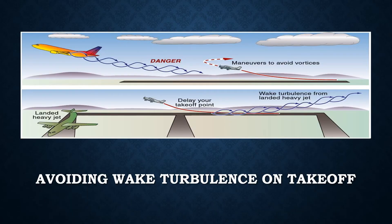Avoiding wake turbulence on takeoff is a bit trickier because larger aircraft often climb much faster than smaller general aviation airplanes. Since vortex production starts when an aircraft takes off, it's important for you to lift off prior to the point of the previous aircraft. However, after you've lifted off, you have a second issue. If you maintain the same heading as the aircraft in front of you, the potential to fly through their wake is very high. By maneuvering left or right of the runway after takeoff, you can ensure you stay clear of the vortices. As you can see in this picture, you should lift off the runway prior to the point at which the preceding aircraft lifts off, and maneuver your aircraft to avoid the flight path of the preceding aircraft.